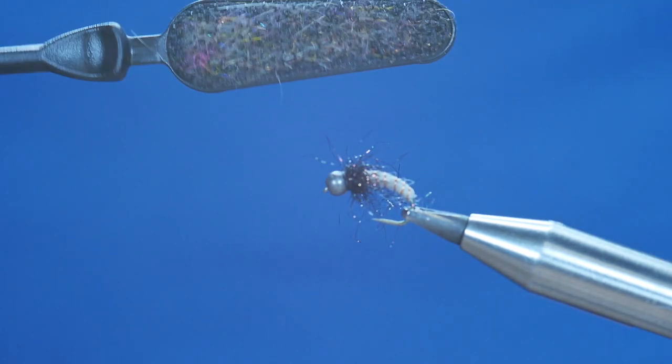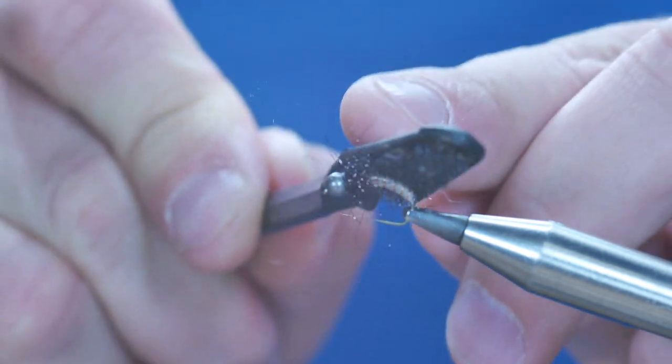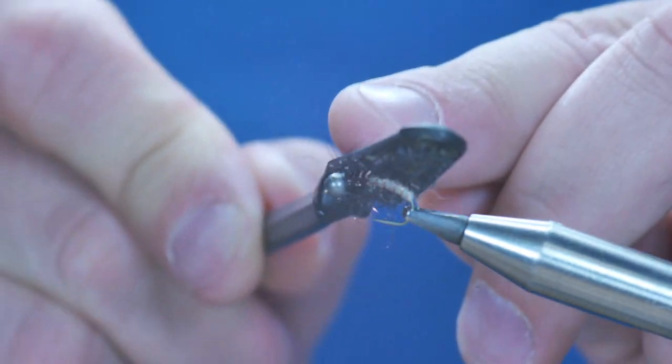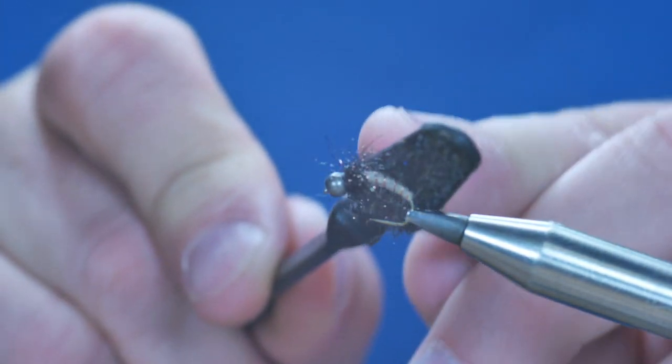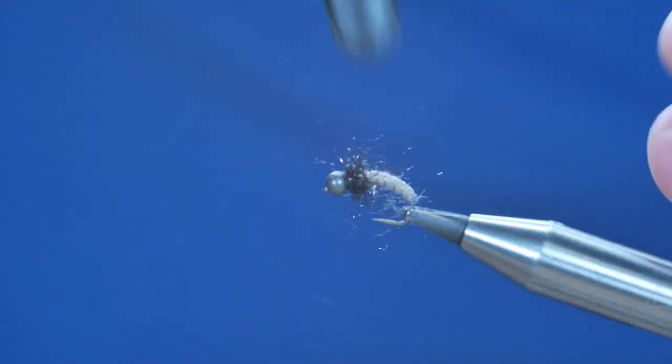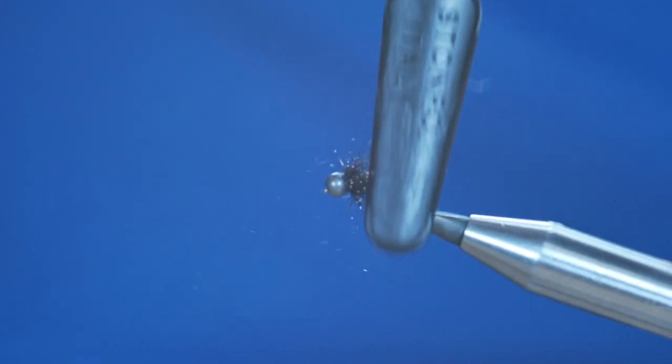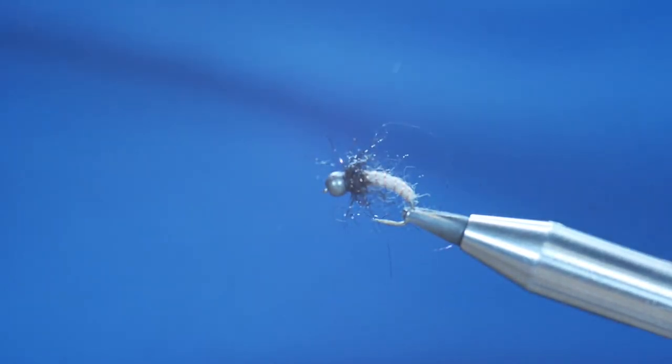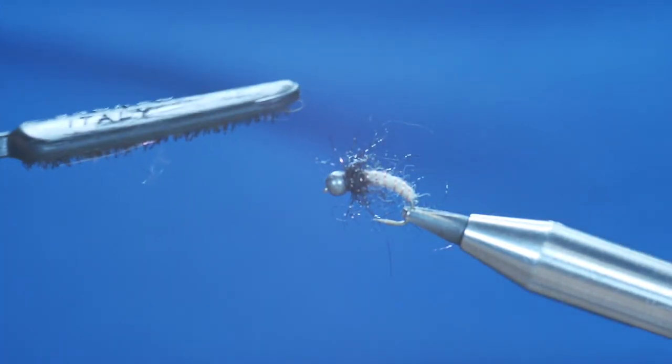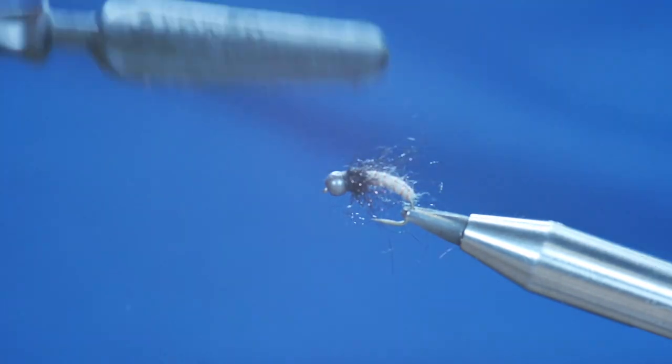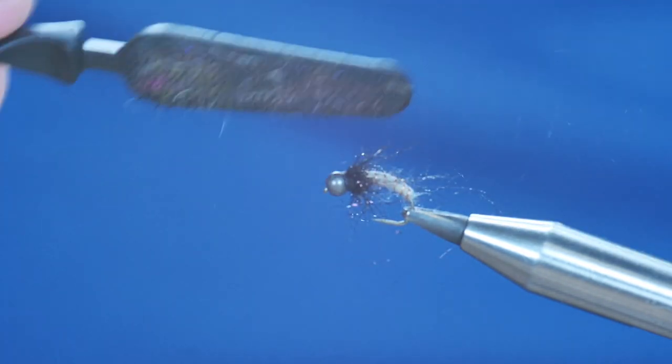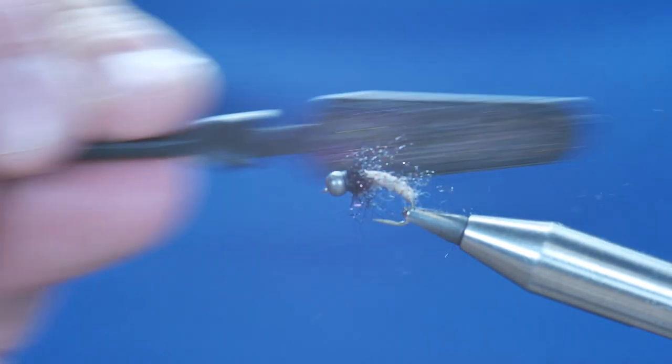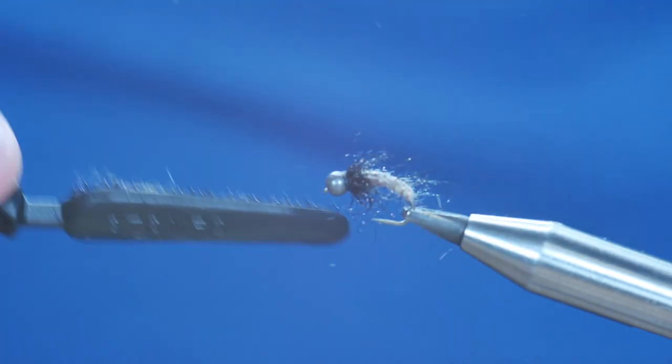And then just to finish off, I'm going to come in with my dubbing brush. Firstly, I'm going to just rough out a few fibers of the wool, and then I'm going to just push back my dubbing on my thorax.